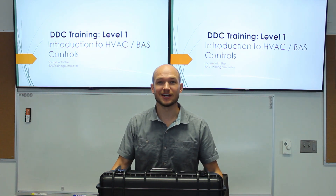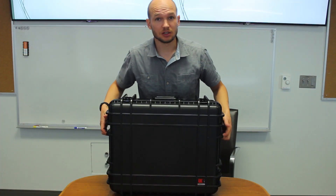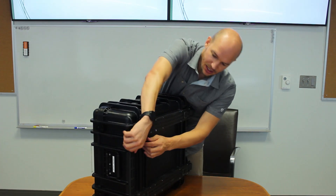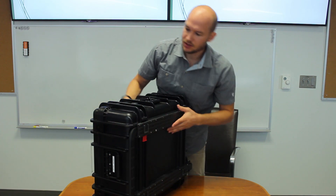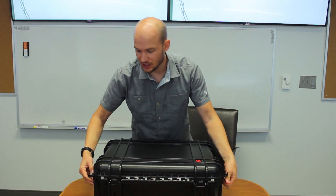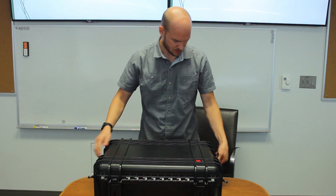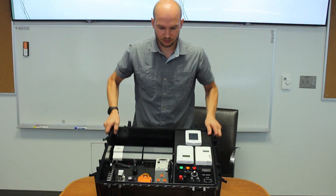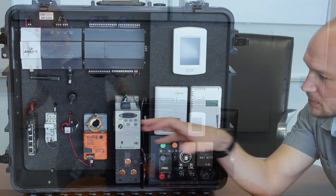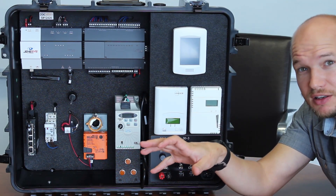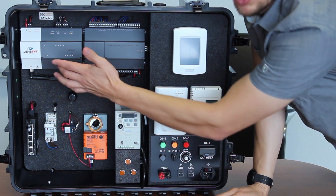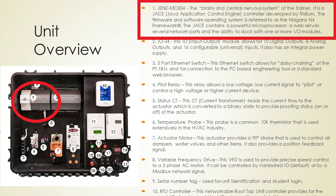Let's open this up and show you some of the goods inside. This thing is really robust — it's a hard plastic case, it has wheels and a handle. It is heavy, around 51 pounds. I'll zoom in here and talk about some of the actual components — this would be typical stuff you'd see on any job site with a building automation system.